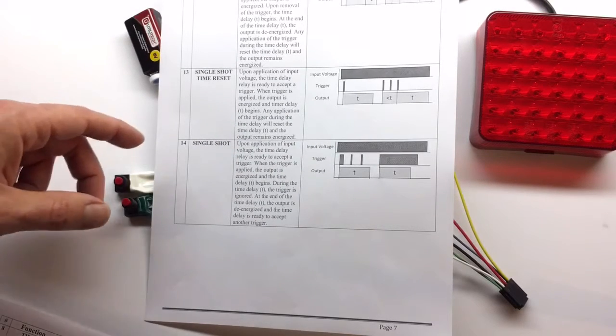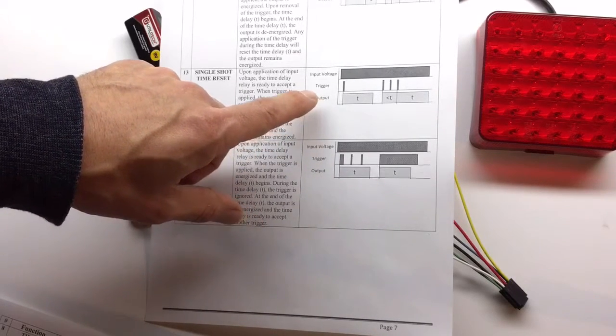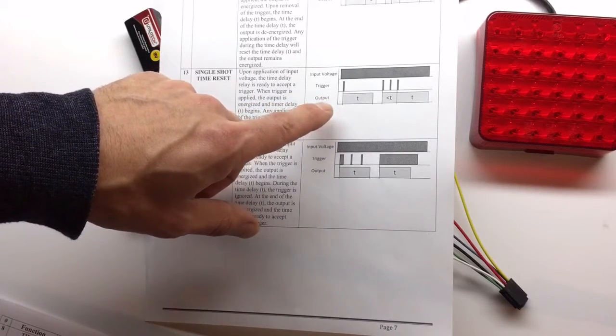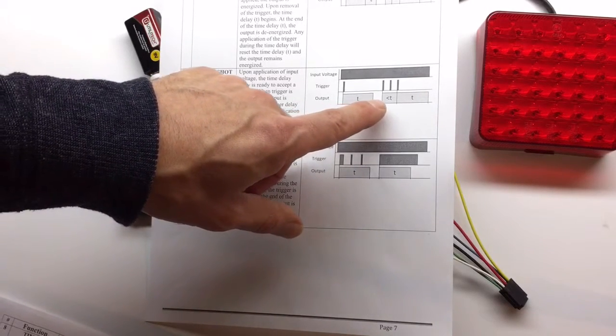Okay, option number 13: single shot. In this case, as soon as we apply the trigger, the time count starts, the light turns on, and it will turn off after a period of time. If I apply the trigger during that time, then the count starts from the last trigger.